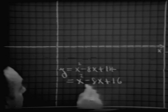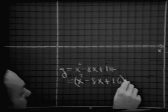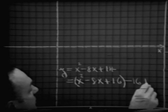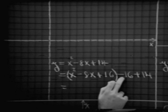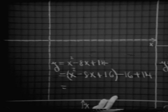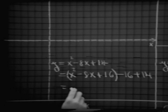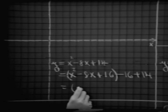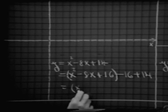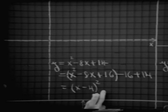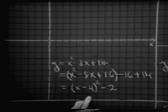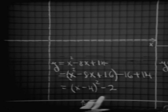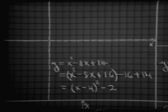Does everyone agree with that? Now, if I were to add that number 16, at the same time let me simply subtract 16 and then add the number 14 that we started with. So that we have negative 16 plus 14, which is negative 2. And now looking at what we have in parentheses, this may be written as x minus 4, the quantity squared, minus 2. And what is the equation of the axis of symmetry? x equals 4.